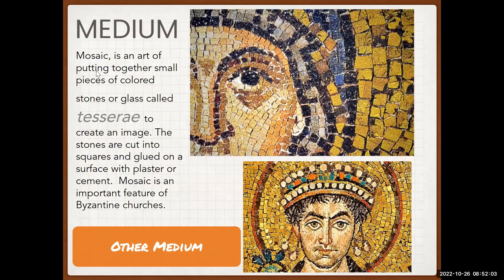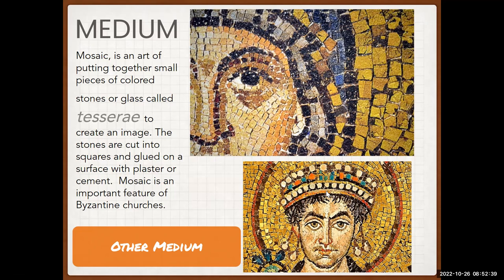Another medium is mosaic — the art of putting together small pieces of colored stones or glass called tesserae to create a particular image. The stones are cut into squares and glued on a surface with plaster or cement. Mosaic is an important feature of Byzantine churches. Aesthetics — the philosophical study of beauty and taste — explains how artists were able to come up with this particular medium of art.